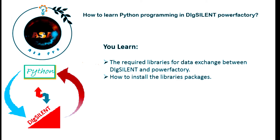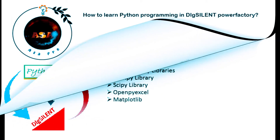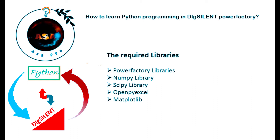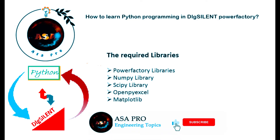At the end of the video we will also learn how to install those required libraries. To create data exchange between Python and DIgSILENT software, we need to have some basic libraries such as the DIgSILENT PowerFactory library, NumPy, SciPy, OpenPyXL, and Matplotlib. There are also some more required libraries but we will not use them directly, so no need to mention them here.